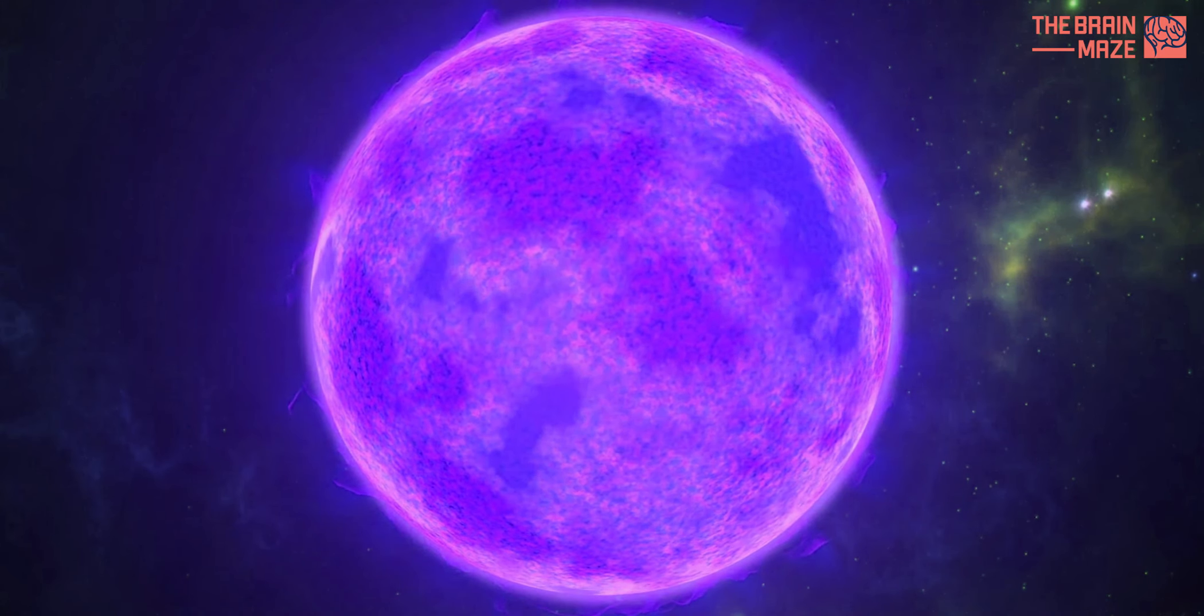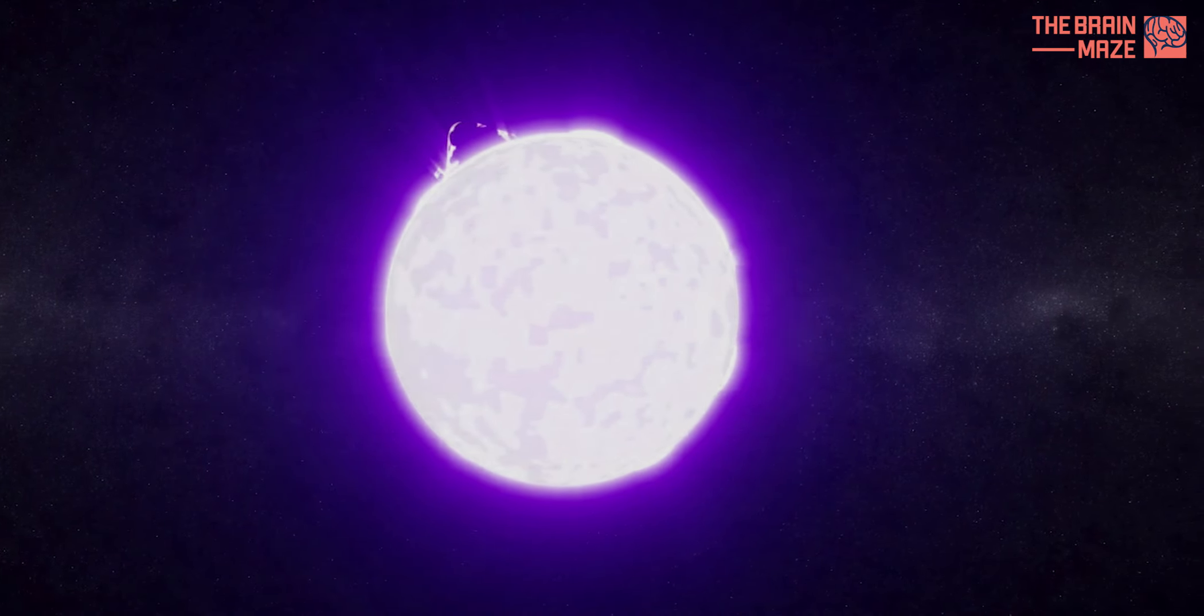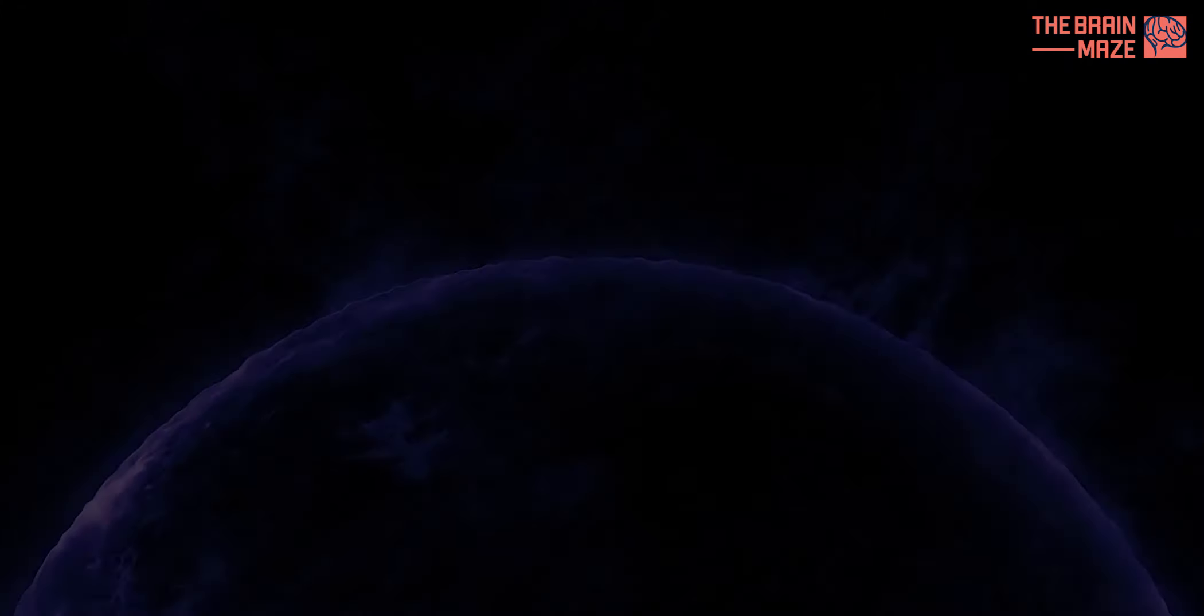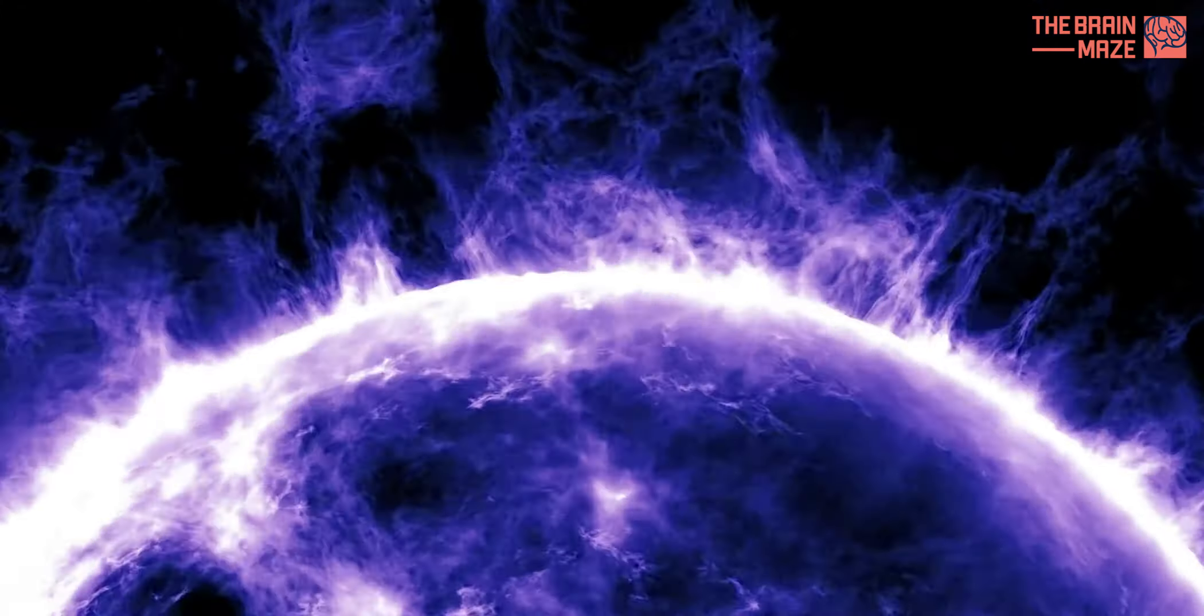So what makes these Wolf-Rayet stars like WR-102 so hot? These fiery monsters burn hydrogen incredibly fast through a process called the CNO cycle. But that's not all.